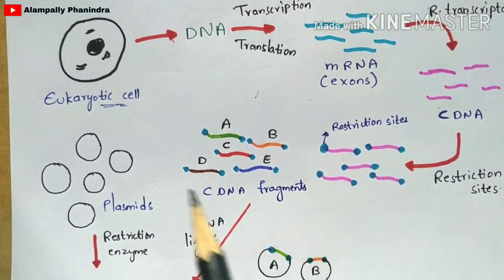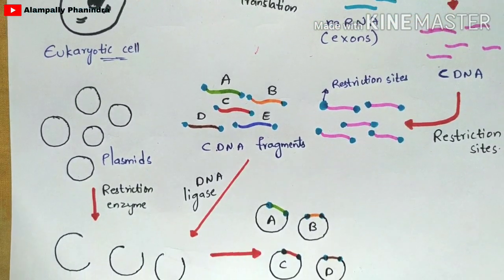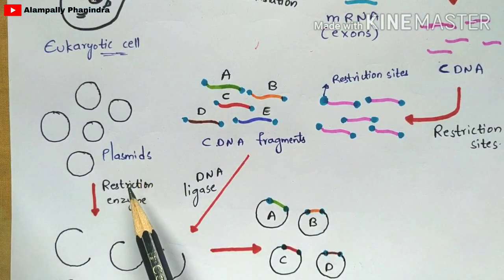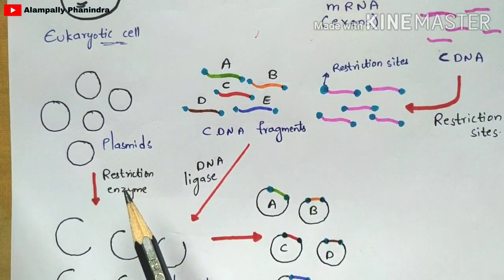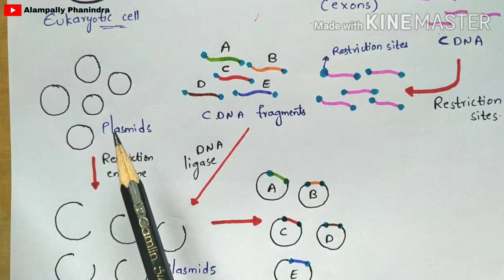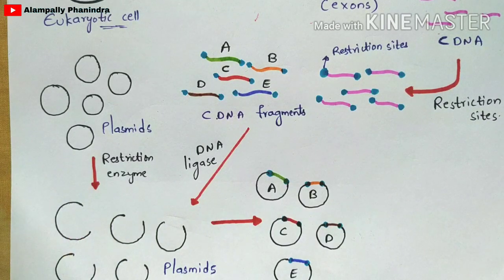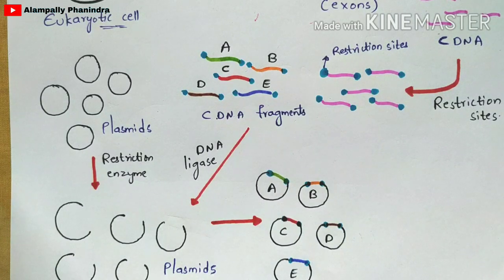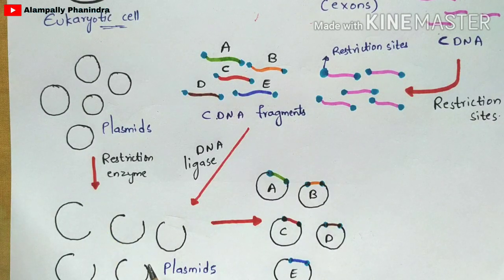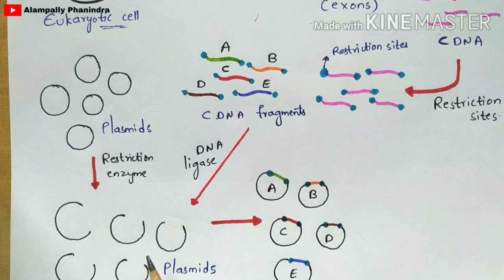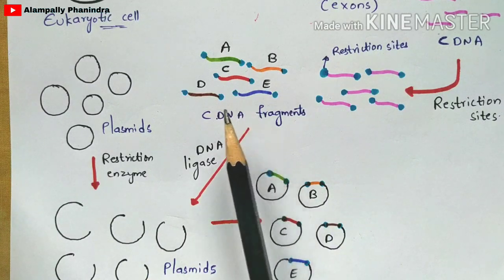On the other hand, you take plasmids. To these plasmids, you add restriction enzymes. Once you add the restriction enzymes, the closed circular plasmids get opened — a specific nucleotide sequence gets restricted and eliminated — so the plasmid becomes linearized and open.